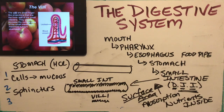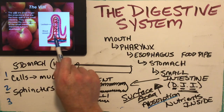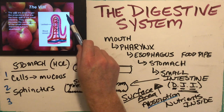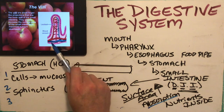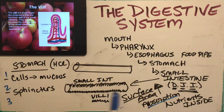Inside each villus are two important things. First, for absorption, there are blood vessels — little capillaries. A nutrient comes in, hits the villus wall, passes through into the capillary, enters the bloodstream, and can then travel around the body to be delivered to cells. This is how the inner wall of the small intestine absorbs nutrients and puts them into the blood.